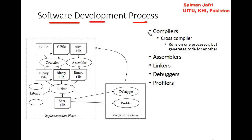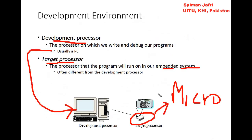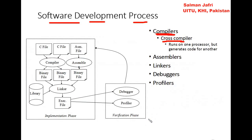For the software development process, we usually use compilers — these are typically called cross compilers. Why are they called cross compilers? They run on one processor but generate code for another processor. The cross compiler runs on the development processor but produces output for the target processor.